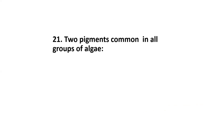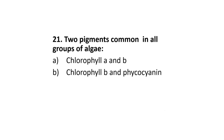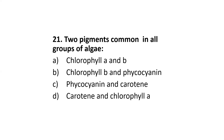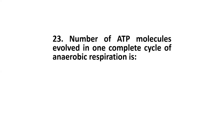Next: two pigments common in all groups of algae are — chlorophyll a and b, chlorophyll b and phycocyanin, phycocyanin and carotene, or carotene and chlorophyll a? The correct option is D: carotene and chlorophyll a.